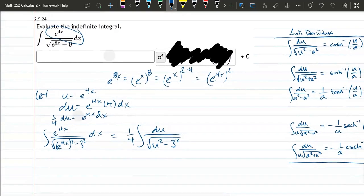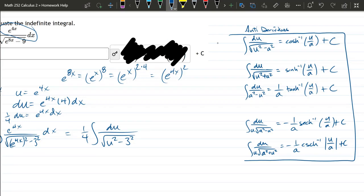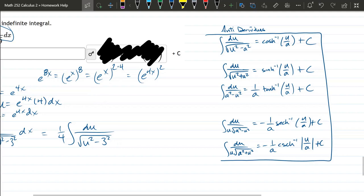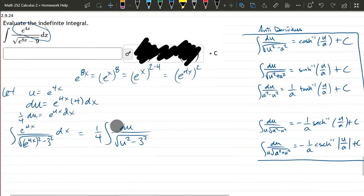In this form, it should be really obvious what antiderivative we have. So, we have u squared minus a squared. Just remember, the bottom two here have an extra u outside. So, it's not going to be one of those. It's the very first one. Yup. Hyperbolic cosine.